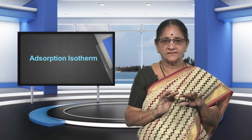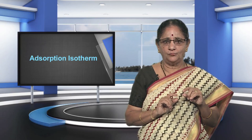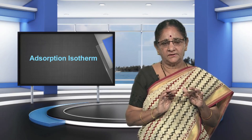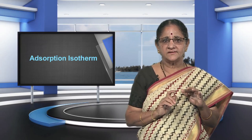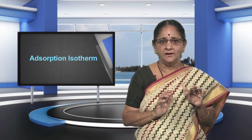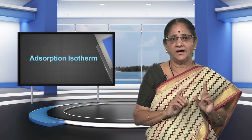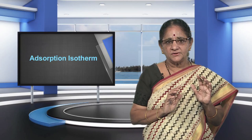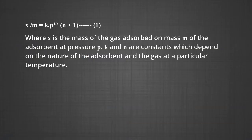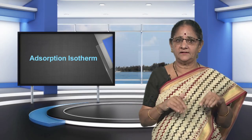The adsorption of a gas on a solid surface depends upon the pressure of the gas. The variation in the amount of gas adsorbed by the adsorbent with pressure at constant temperature can be expressed by means of a curve termed the adsorption isotherm. Freundlich gave an empirical relationship between the quantity of gas adsorbed by unit mass of solid adsorbent and pressure at a particular temperature. The relationship is expressed by the equation x/m = k·p^(1/n), where n > 1, x is the mass of gas adsorbed on mass m of the adsorbent at pressure p, and k and n are constants depending on the nature of the gas at a particular temperature.